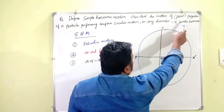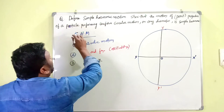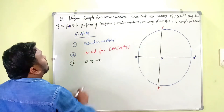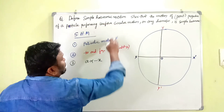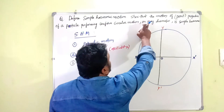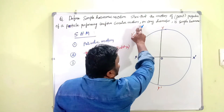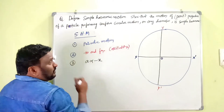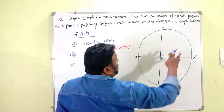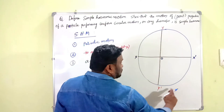The question is: define Simple Harmonic Motion and show that the motion of the projection of a particle performing uniform circular motion on any diameter is Simple Harmonic. So there is a circle with a particle performing uniform circular motion, and we need to show that projection is SHM.